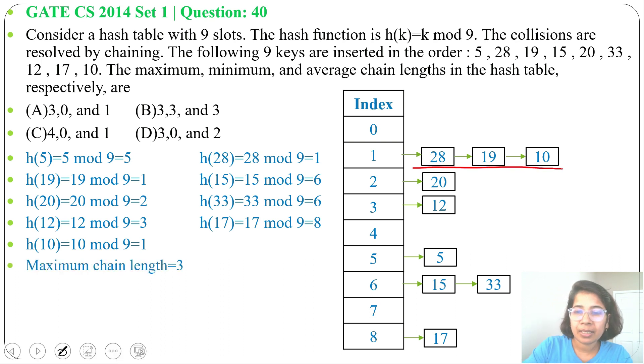And minimum chain length is 0 for index 0, 4, and 7. Now average chain length: number of keys is 9, so 9 divided by 9, it will be 1. Or simply you can add the chain lengths and divide by 9.